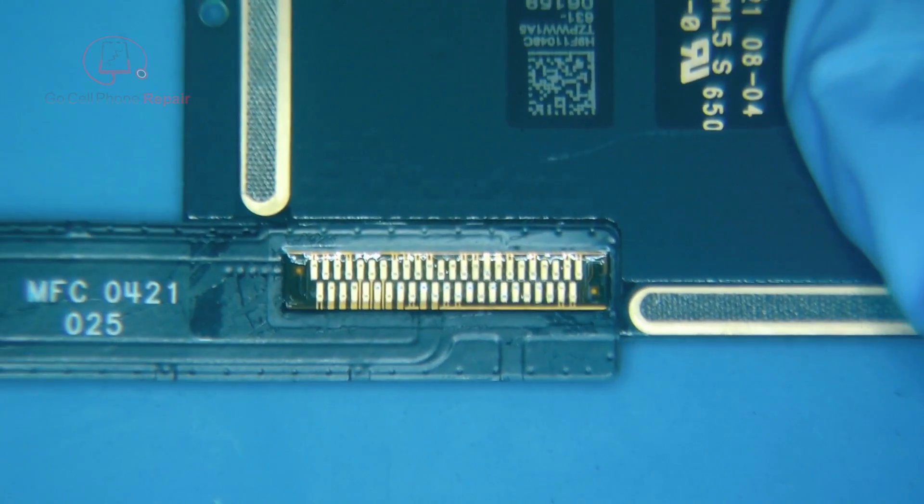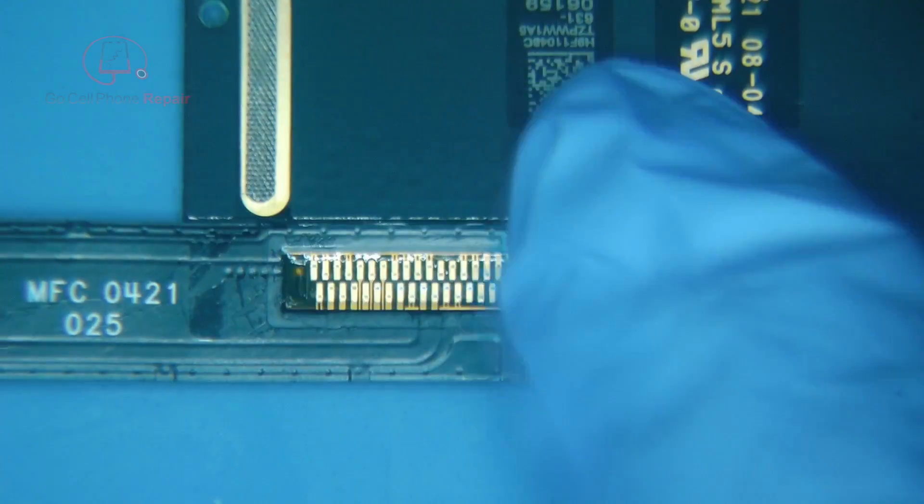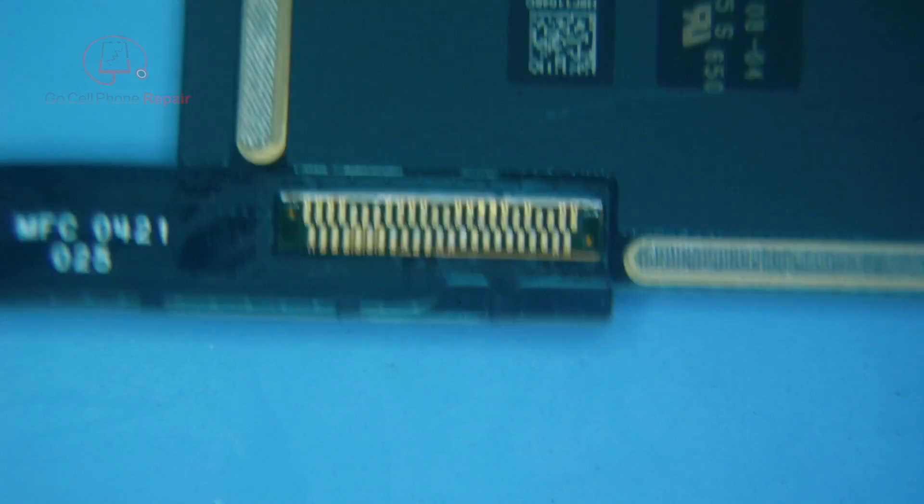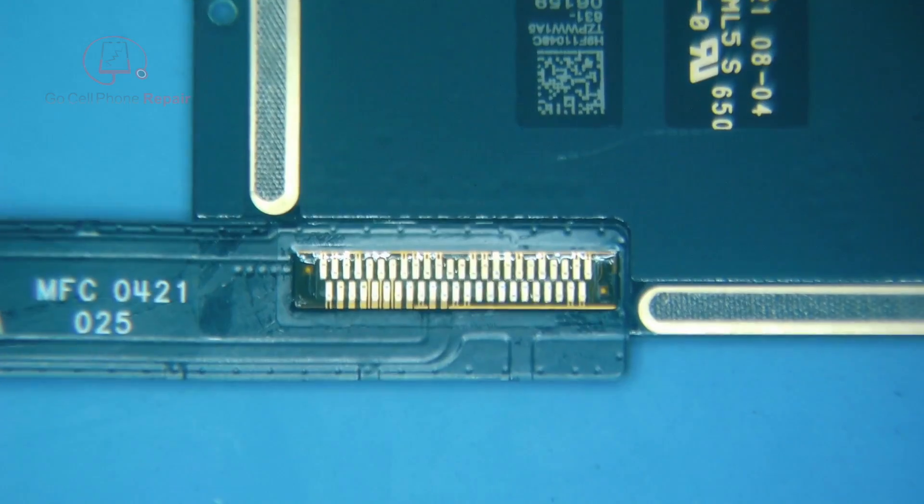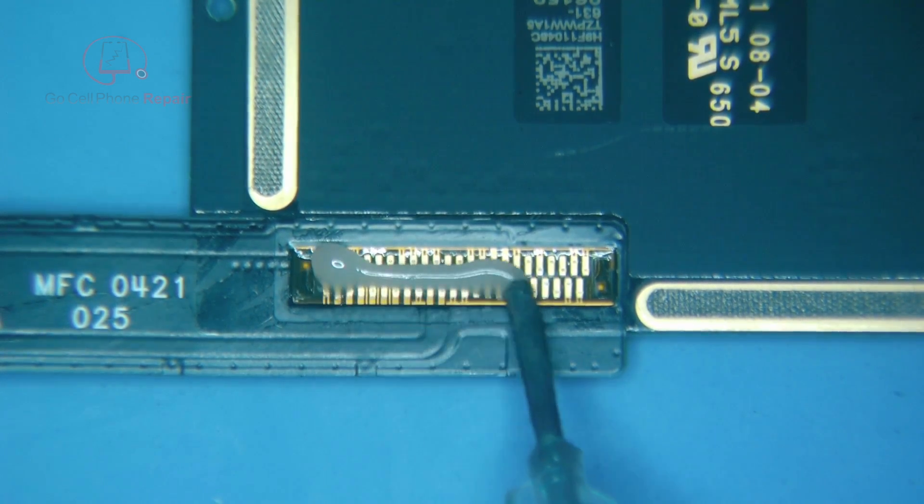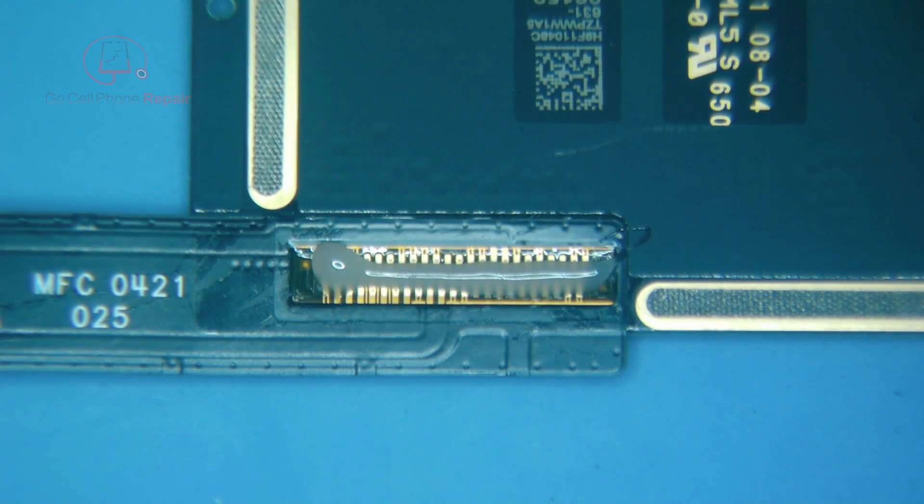Now the next thing we're going to do, and I'm going to actually flip this around the opposite direction here. So we're going to put some leaded solder, first flux, and then a whole bunch of leaded solder along the top here. And that's going to reduce our melting point temperature for when we remove this. So we'll go ahead and start by putting some flux right across here. We'll get some leaded solder, and we're just going to coat this.